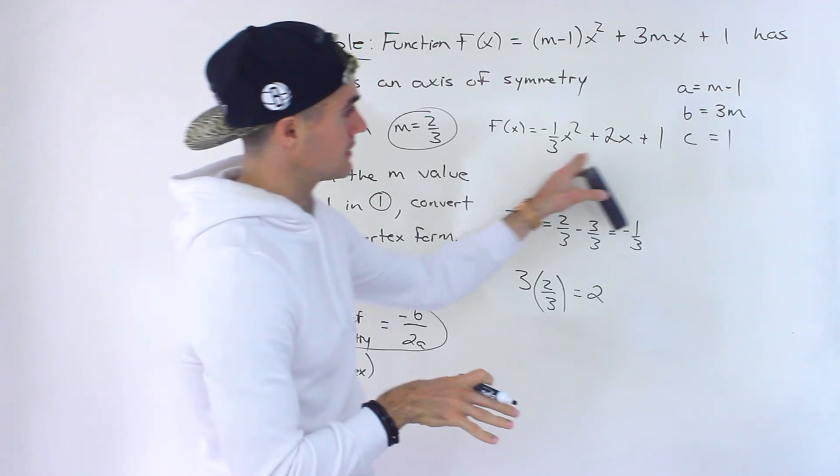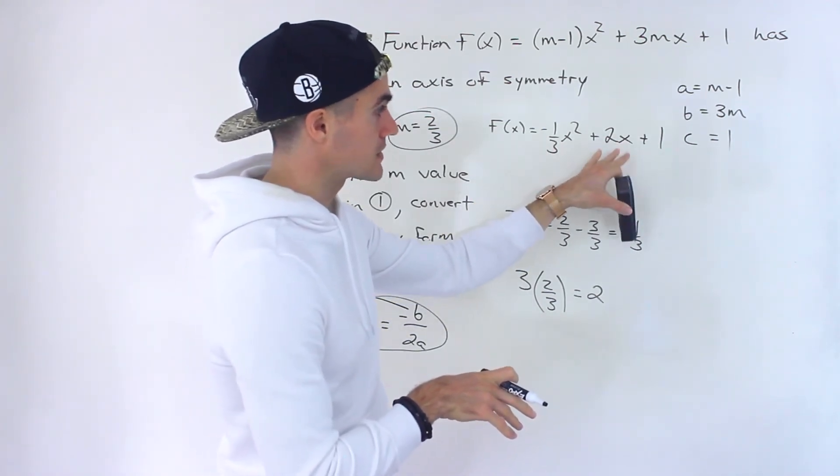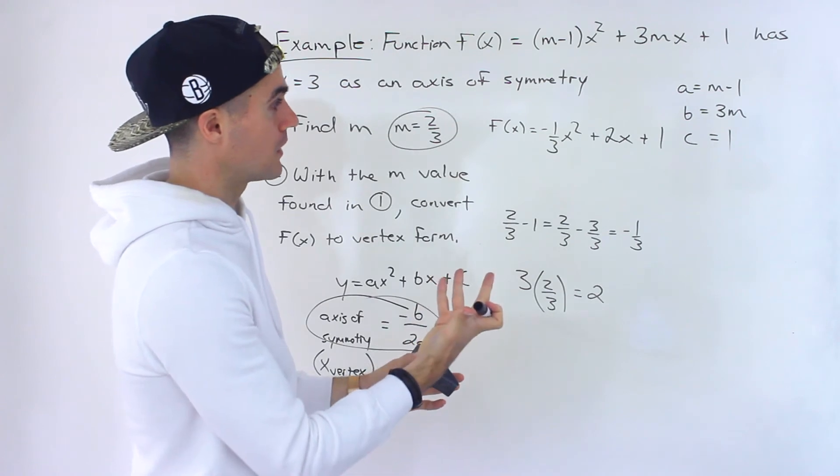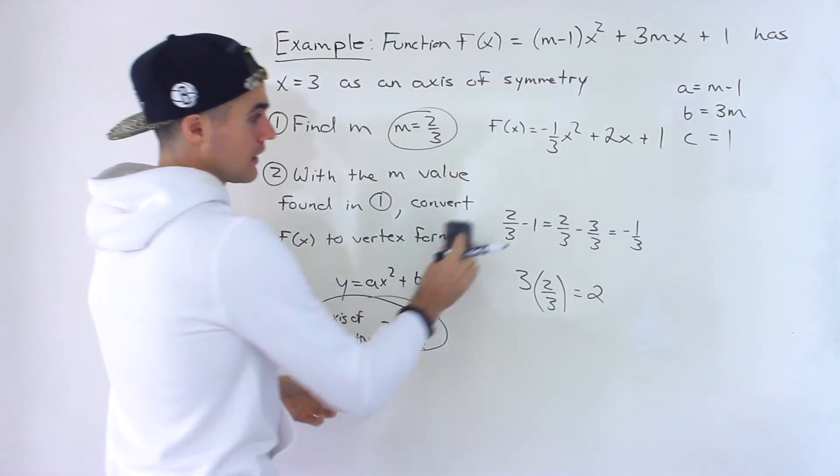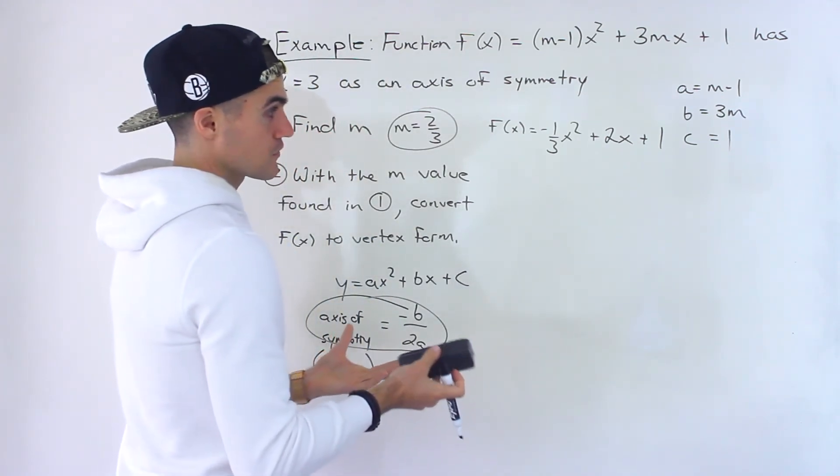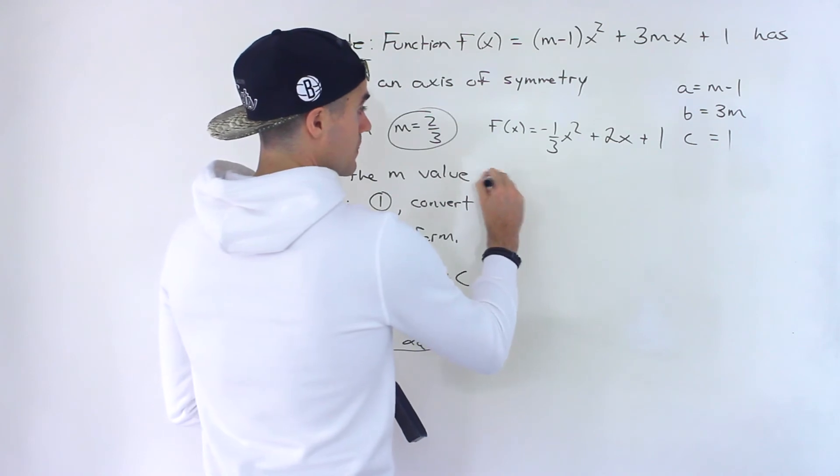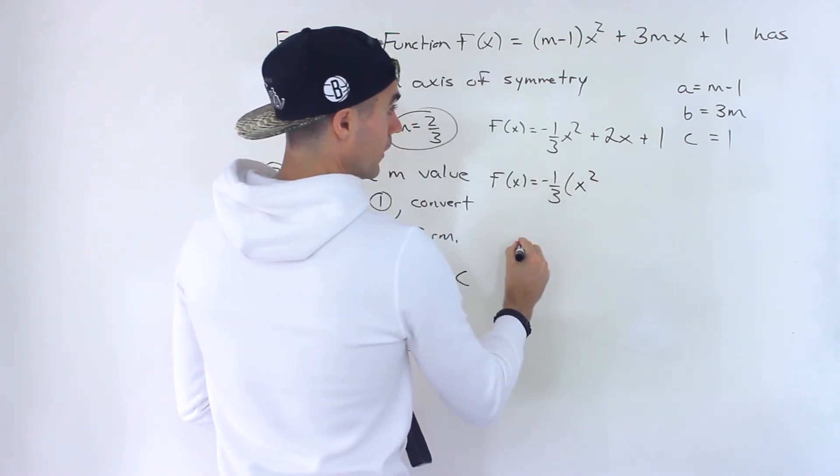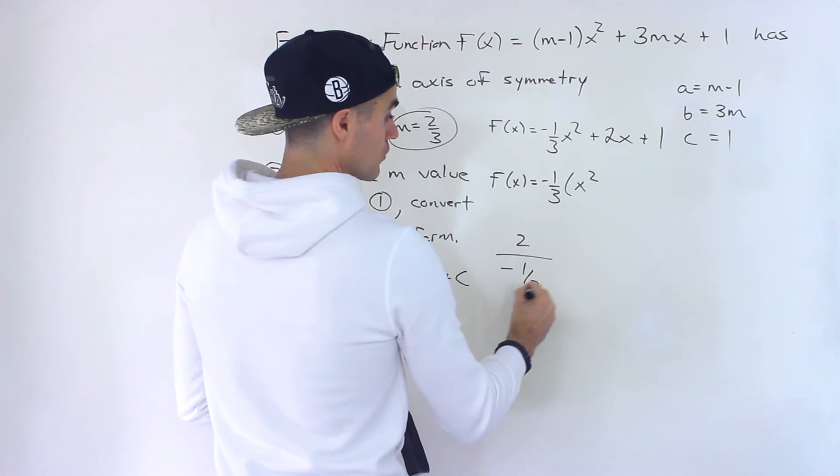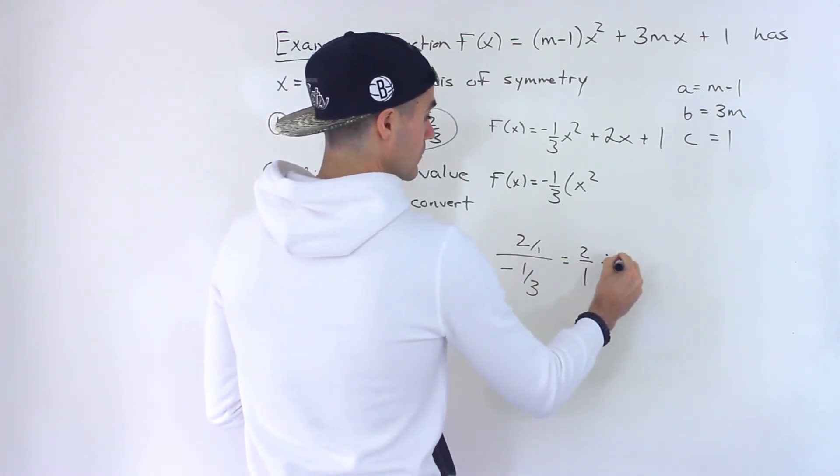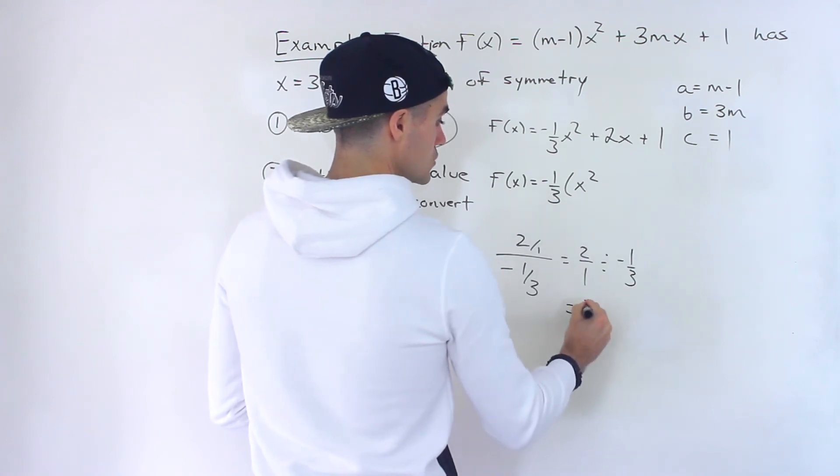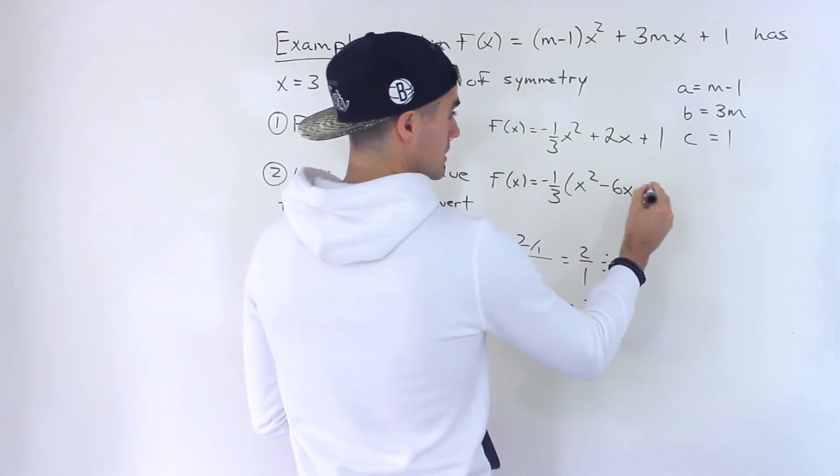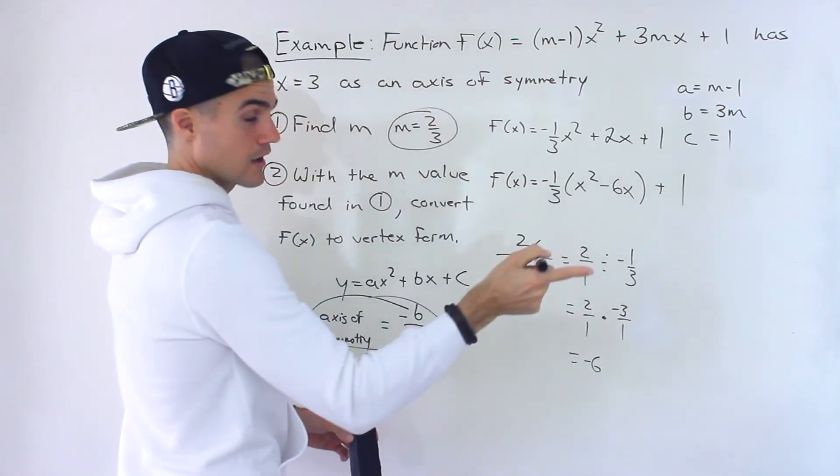And notice that this quadratic is still in standard form, y equals ax² plus bx plus c. But now we don't have any other constants to figure out or worry about. We have all the numbers we need. And so from here, we just have to convert it to vertex form. We have to complete the square on this. So first step is we want to take out a negative 1 over 3. And we'd be left with x². Now, what is 2 divided by negative 1 over 3? Well, it'd be like 2 over 1 divided by negative 1 over 3, which would be like 2 over 1 times negative 3 over 1, which would be negative 6. So this would end up being minus 6.